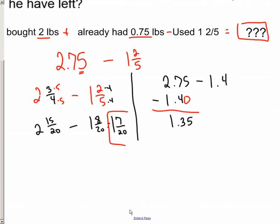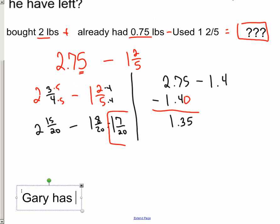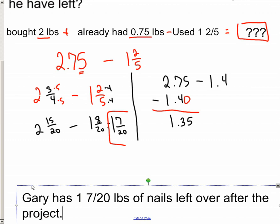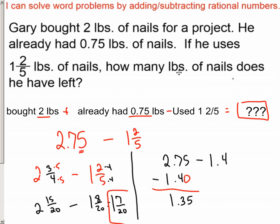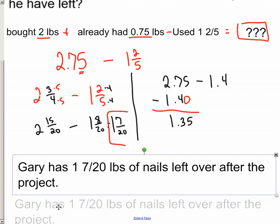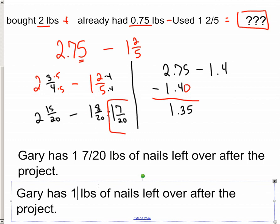Now, how should we take the time to actually show the answer? We would say, what was his name, Gary? Gary has 1 and 7/20ths pounds of nails left over after the project because it was talking about a project and how many pounds of nails does he have left. So we're going to just basically let that problem restate it. And down here, it would be the exact same thing if we went the decimal route. Instead of saying 1 and 7/20ths, we'd say 1.35 pounds of nails.